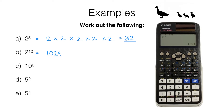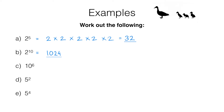Let's move on to question C. 10 to the power of 6 is 10 multiplied by 10 multiplied by 10 multiplied by 10 multiplied by 10 multiplied by 10. And hopefully without needing a calculator you can see that that will be 1 million.